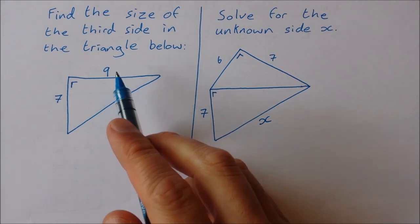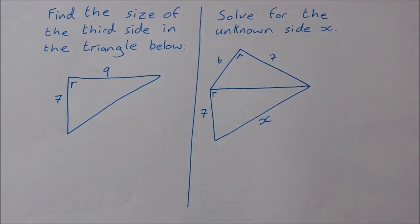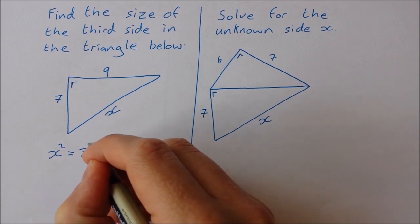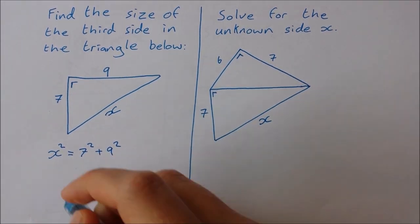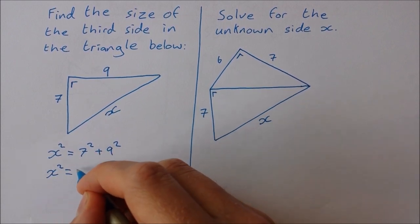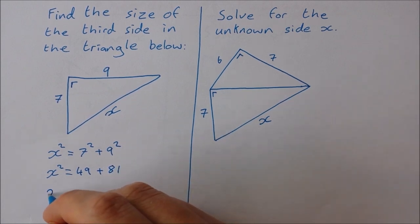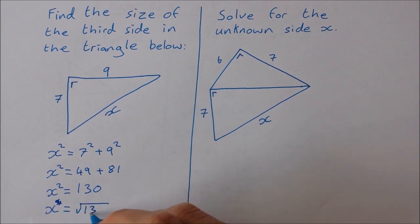Okay, so find the size of the third side in the triangle below. Okay, so let's call the third side x. You can call it whatever you want. We usually go with x. So x squared is equal to 7 squared plus 9 squared. x squared is equal to 49 plus 81. So that means x squared is equal to 130. So we just take the square root of 130. x is equal to the square root of 130, which works out to be 11.40, correct to two decimal places.